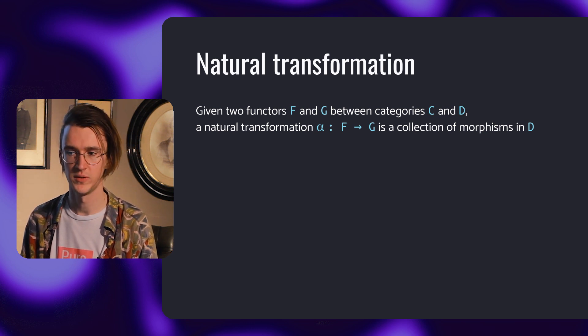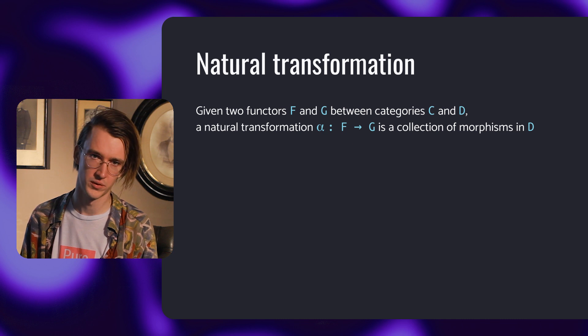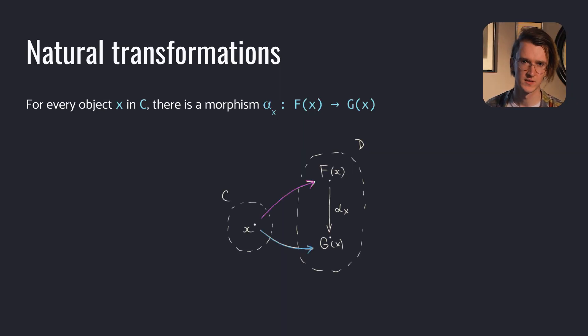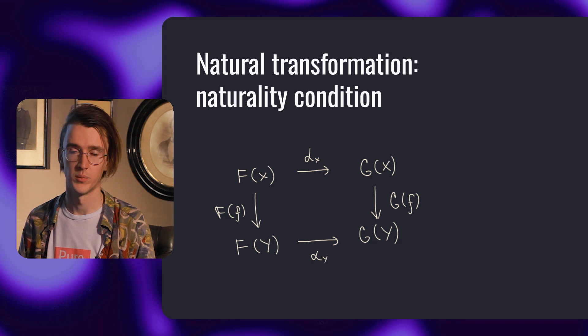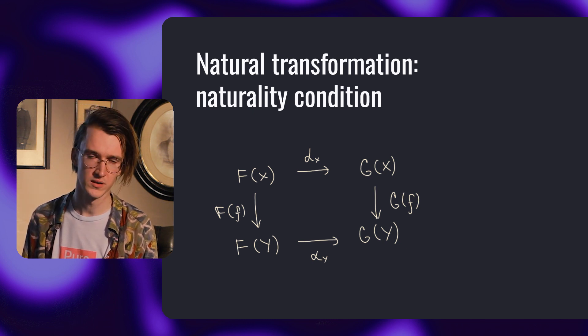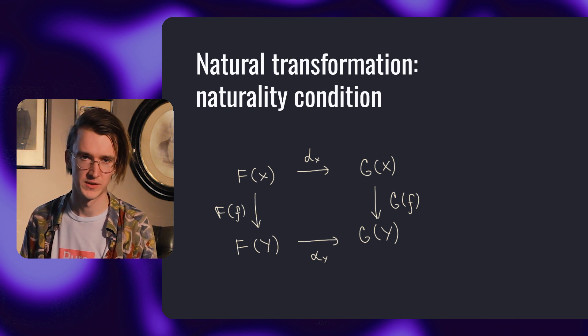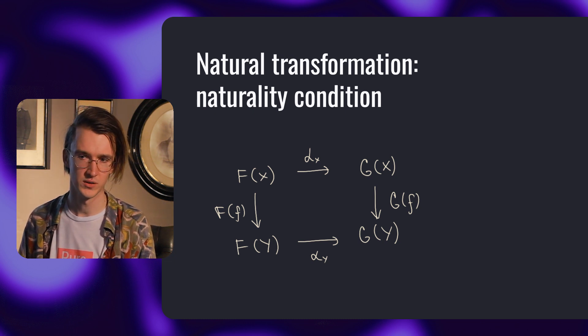A natural transformation is a way to transform one functor into another. Given two functors F and G between categories C and D, a natural transformation alpha from F to G is a collection of morphisms in D. For every object X in C, there is a morphism alpha called the component alpha at X. What does natural transformation have? There are morphisms F of F from Fx to Fy and G of F from G of X to G of Y in D because F and G are functors. And there are morphisms components of alpha.